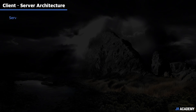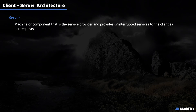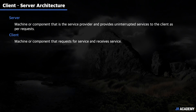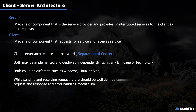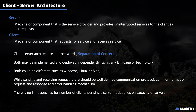The six constraints are: client-server, uniform interface, layered system, cache, statelessness, and code on demand. The first is client-server architecture. A server is a machine or component that provides uninterrupted service to the client as per request, while the client requests and receives the service. This architecture represents a separation of concerns — client and server may be implemented and deployed independently using any language or technology. While sending and receiving requests, there must be a well-defined communication protocol, common format for requests and responses, and error handling. There is no limit on the number of clients per server — it depends solely on server capacity.